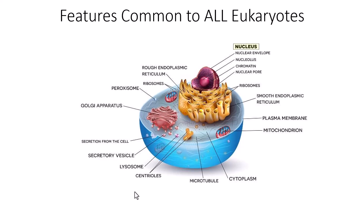There are in fact features common to all eukaryotes. It doesn't matter if they are reptiles, amphibians, fungi, plants, or birds — all of them share several structures. Those structures include the nucleus; being eukaryotes means their cells contain a nucleus with the nuclear envelope, nucleolus, chromatin, and nuclear pores. All eukaryotes also contain 80S ribosomes.